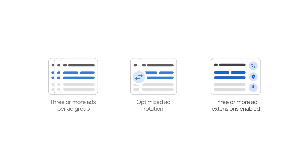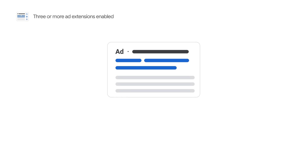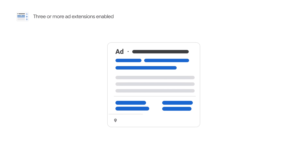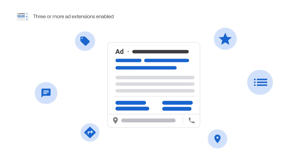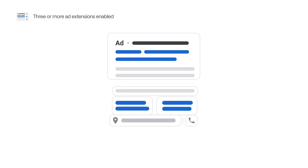The third step is to add three or more ad extensions to each ad group. Ad extensions expand your ad with additional information, giving people more reasons to choose your business. By adding more content to your ad, extensions give your ad greater visibility and prominence on the search results page. To maximize the performance of your text ads,